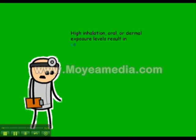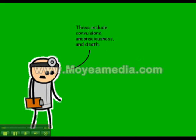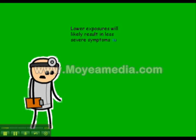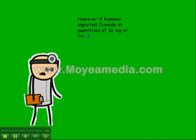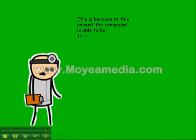Now comes the sad part. High inhalation, oral, or dermal exposure levels result in certain clinical effects. These include convulsions, unconsciousness, and death. Low exposures will likely result in less severe symptoms, such as headache or dizziness. However, if humans ingest cyanide at quantities of 10 mg or less per day, it would not be toxic. This is because at this amount, the cyanide is able to be transformed into the less toxic thiocyanate.